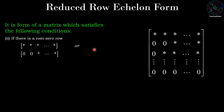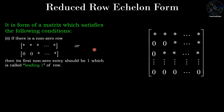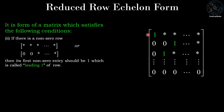Second condition: if there is a nonzero row, then the first nonzero entry should be one, which is called the leading one of the row. We have three nonzero rows, and the green star entries are the leading entries because rows are read left to right. This first nonzero entry should be one.